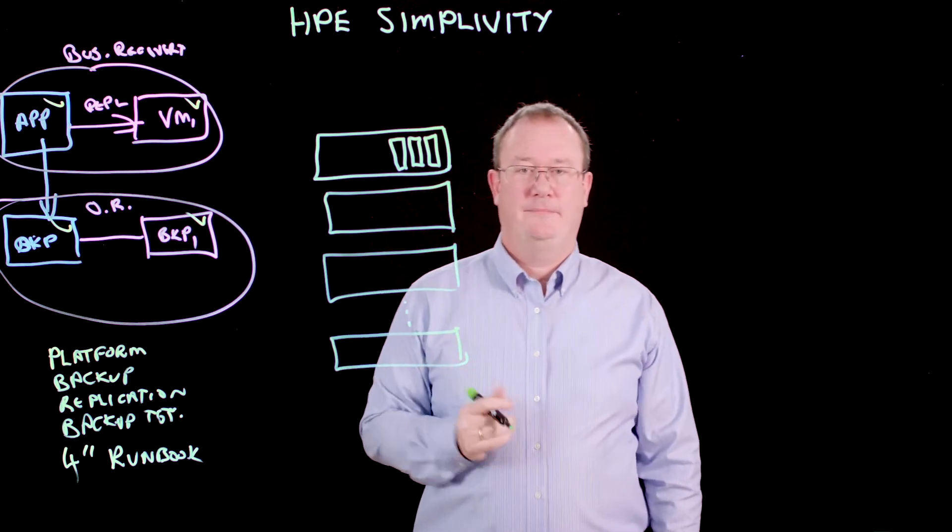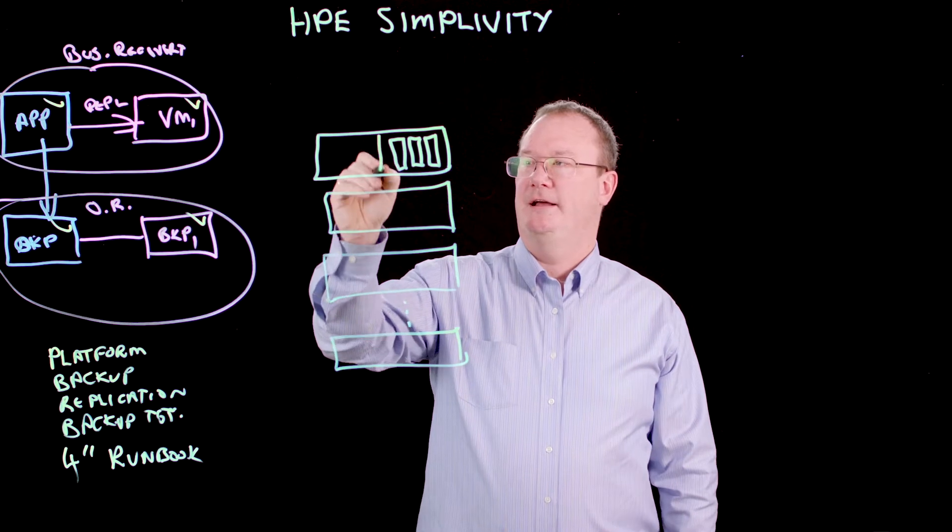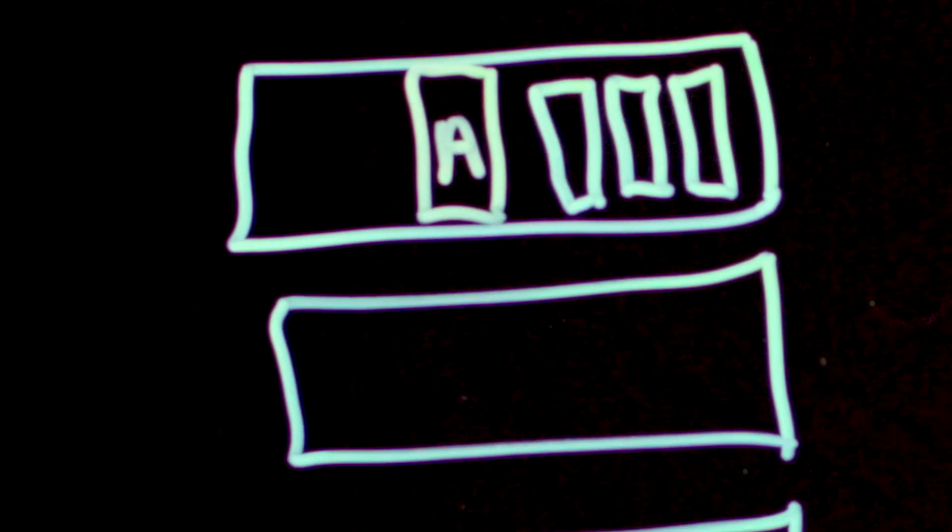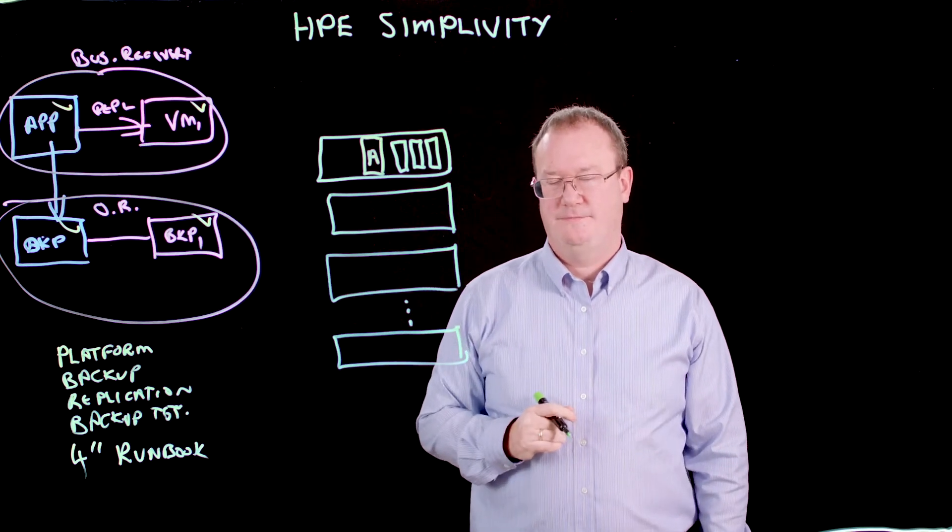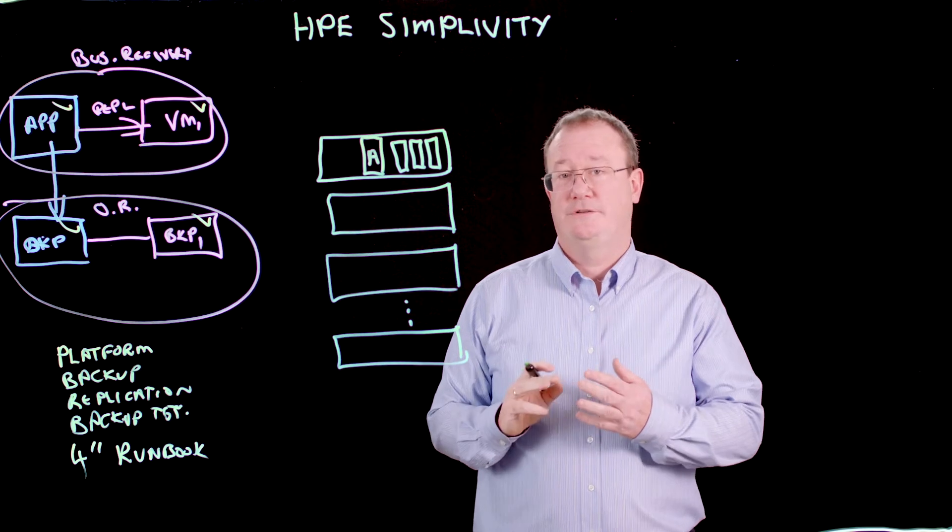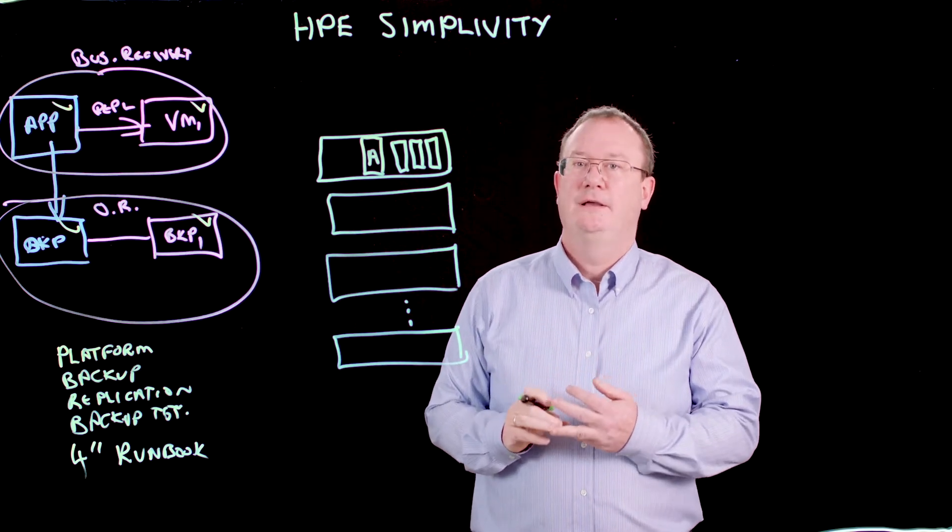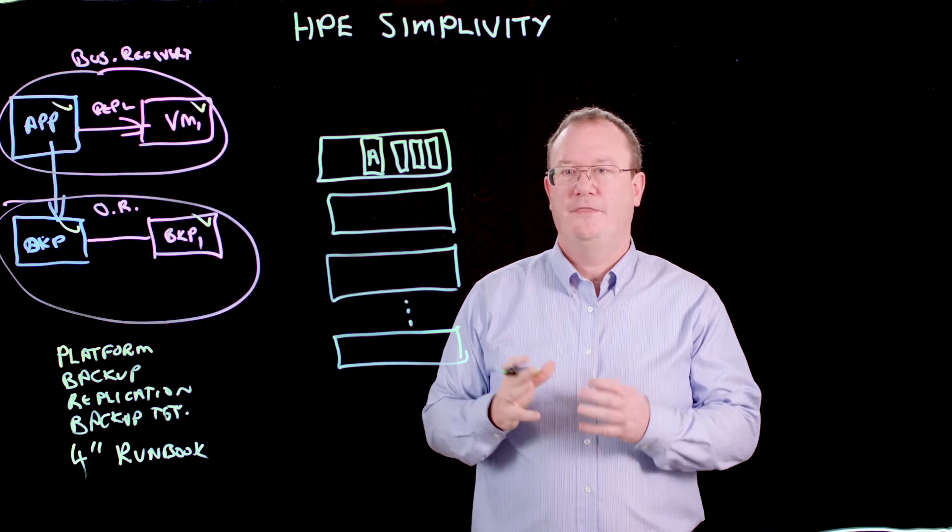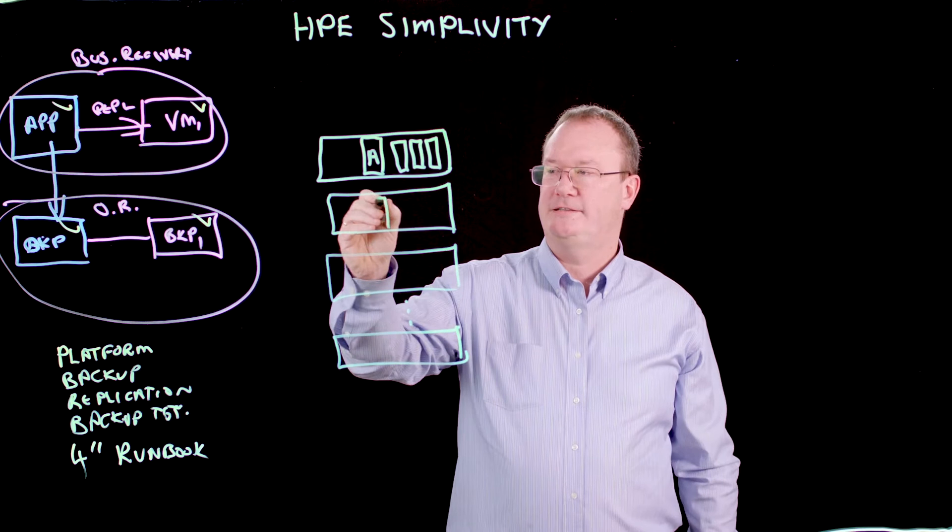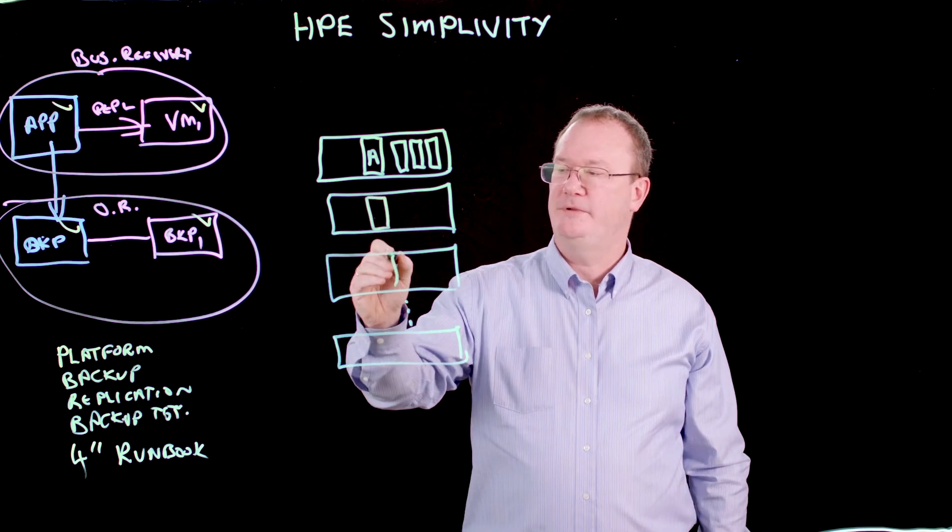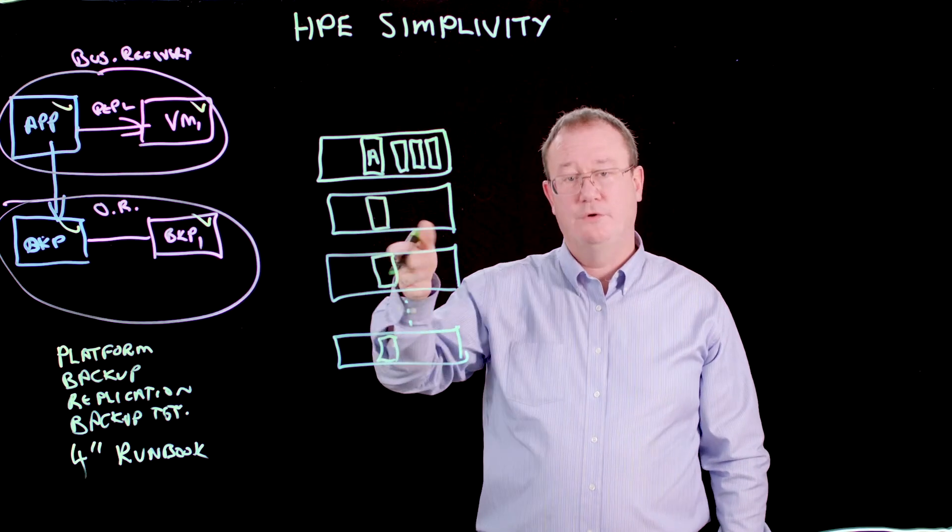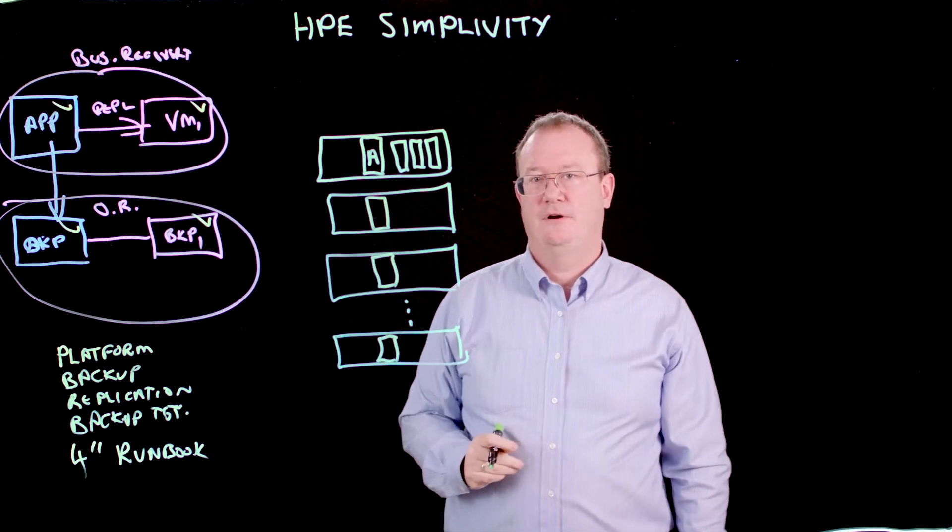Now unlike other hyperconverged solutions, SimpliVity has an extra piece. And this is a hardware accelerator card. And the accelerator card does a number of things for us. It does deduplication and compression in line. It also has a battery protected NVRAM cache. So in essence, it's doing what the controllers in your traditional storage arrays would do for you. But we actually can scale it better because it is distributed. We have one in each node in the cluster. So as our cluster grows, so does the performance of our array accelerators.